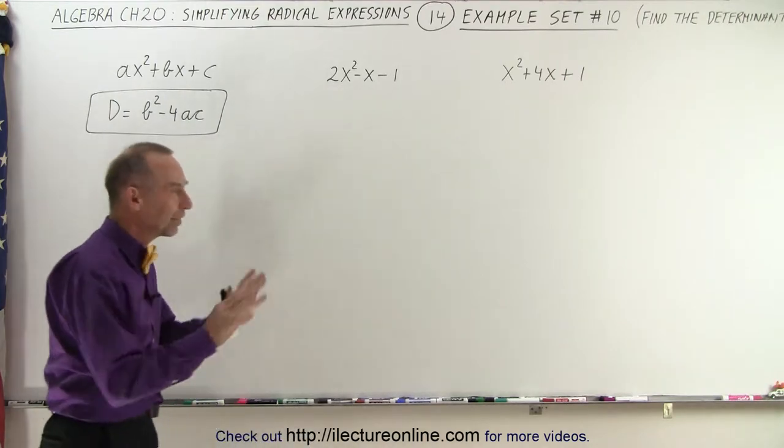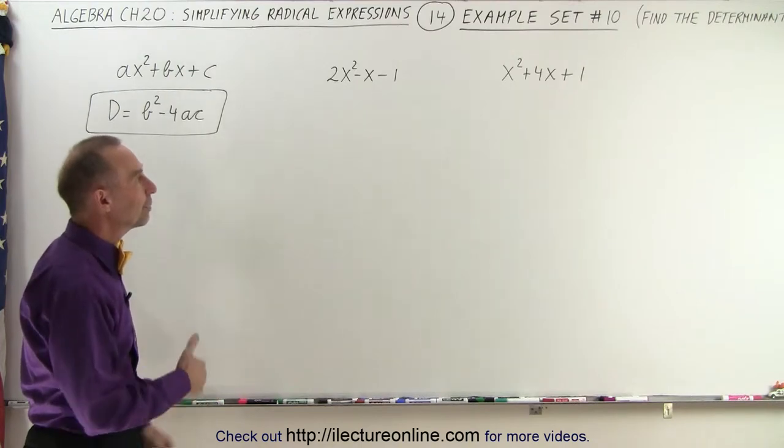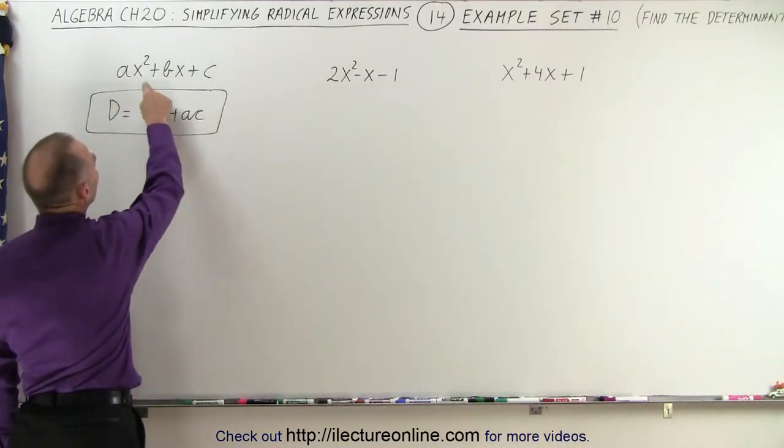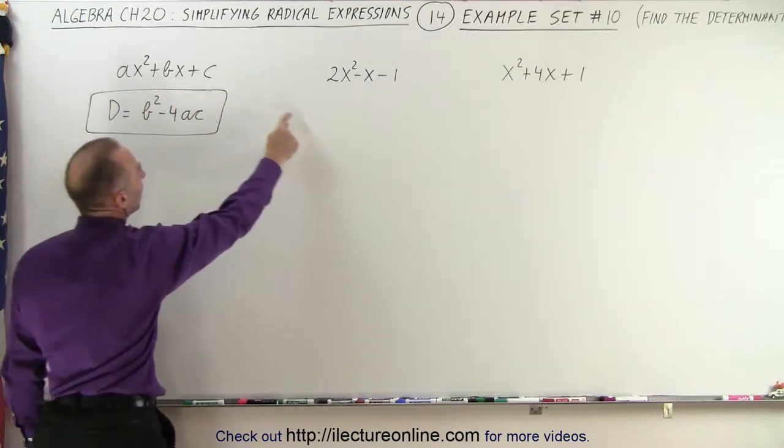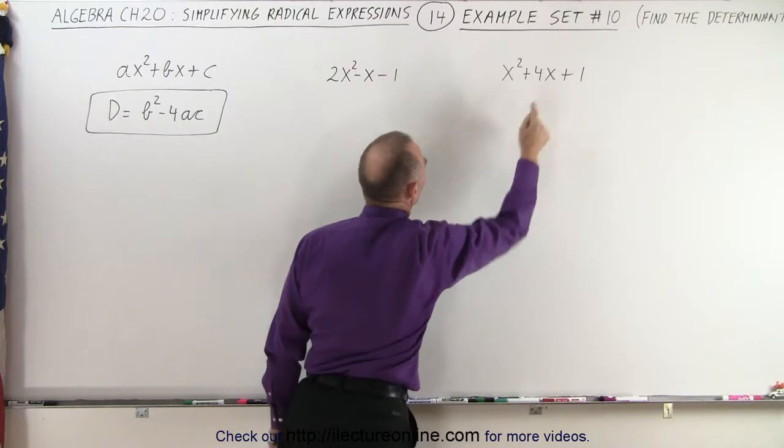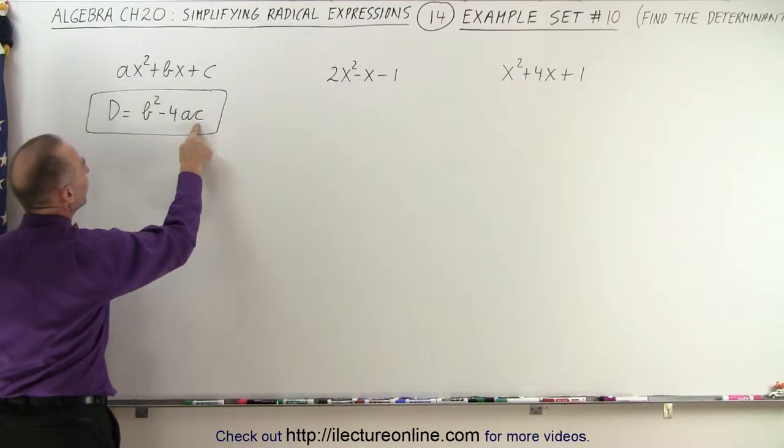Well before we get into all that theory, at least we want to know how to manipulate the particular expressions. So let's say we have something in the form of ax squared plus bx plus c, like 2x squared minus x minus 1, or x squared plus 4x plus 1. The determinant is defined as b squared minus 4ac.